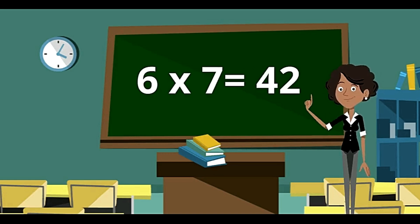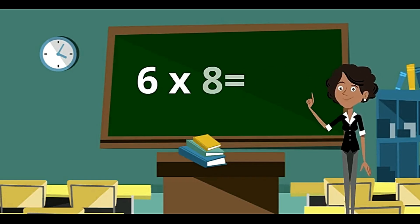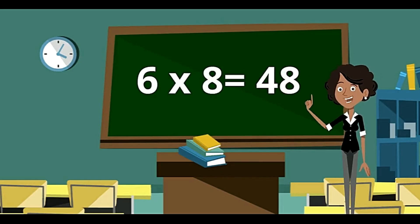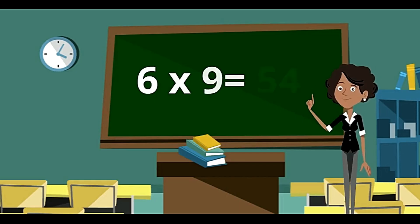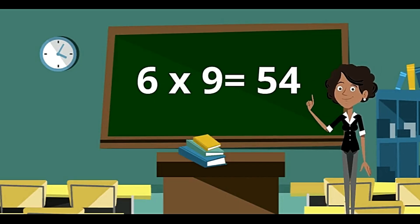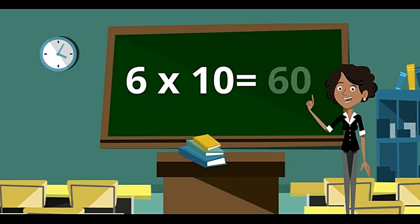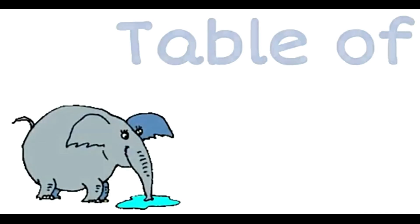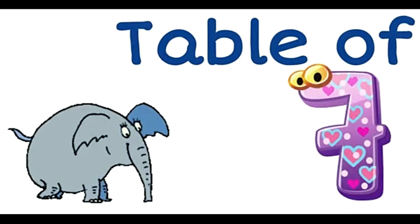6 sevens are 42. 6 eights are 48. 6 nines are 54. And 6 tens are 60. Now we'll learn table of 7.